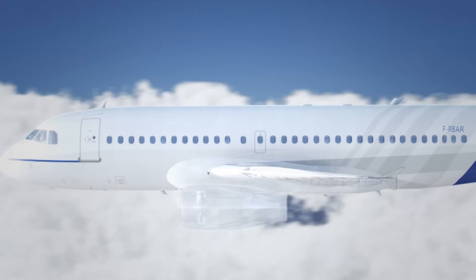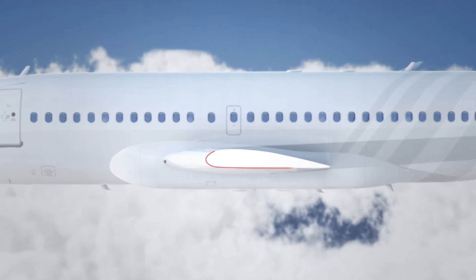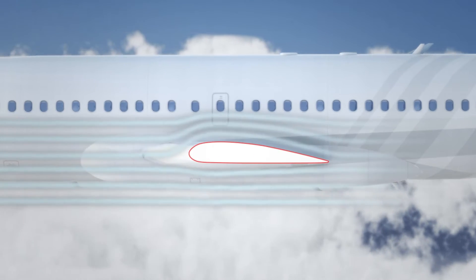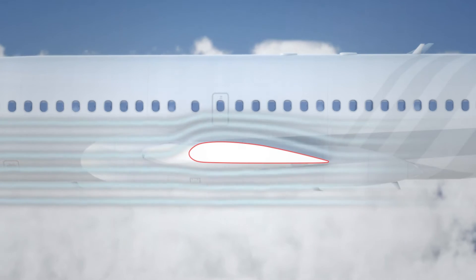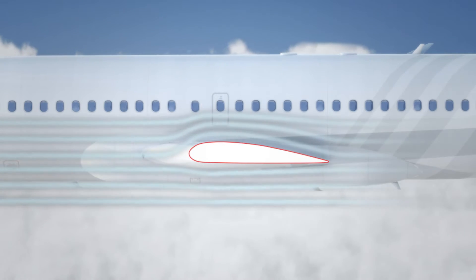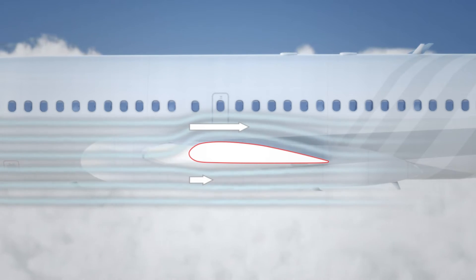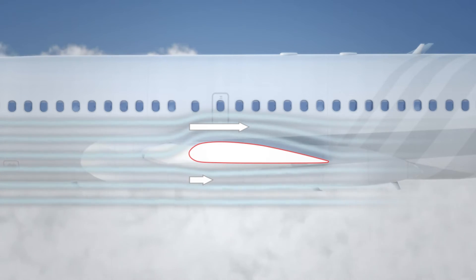This means that the air has a bit further distance to travel when going over the top of the wing. When the air travels a bit further, the speed goes up a bit, and the pressure comes down a bit. This means there's a higher pressure under the wing, which lifts the airplane from the ground.